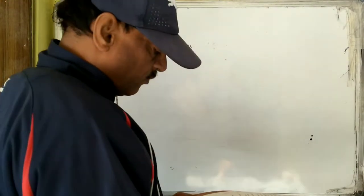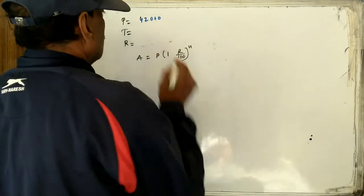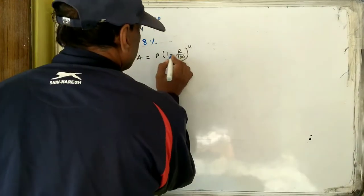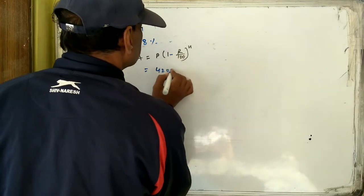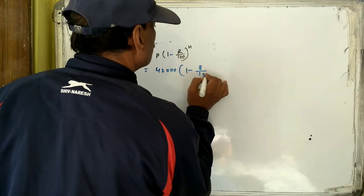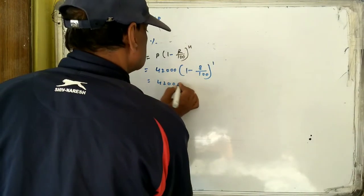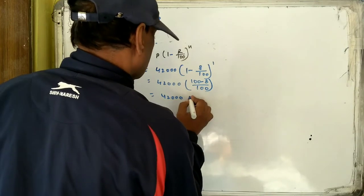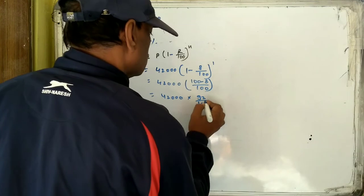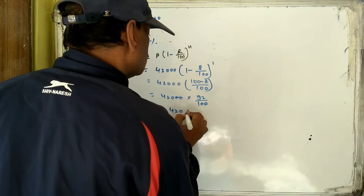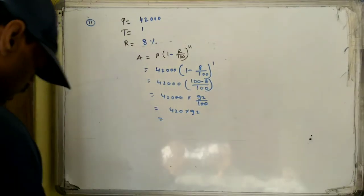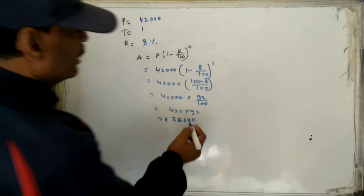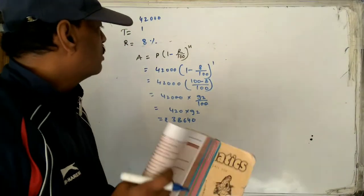Now, if the value is 42,000 and time is 1 year, rate is 8% and here it is minus (depreciation). So the principle is 42,000, rate is 8, time is 1. Applying the depreciation formula: 42,000 into (100 minus 8) divided by 100, which is 42,000 into 92 by 100. Cross-cancelling, 420 into 92 equals 38,640. So the scooter's depreciated price will be Rs. 38,640.